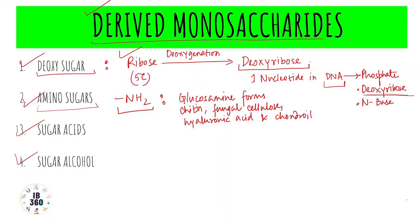So chitin, fungal cellulose, hyaluronic acid, and chondroitin sulfate are all examples of amino sugars, meaning they have an amino group in their monosaccharide structure. Galactosamine is also similarly a component of chondroitin sulfate. Glucosamine means glucose — the monosaccharide — plus an amino group, and galactosamine is galactose with an amino group.